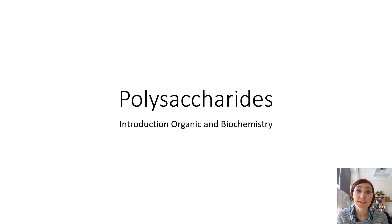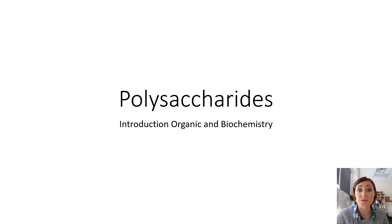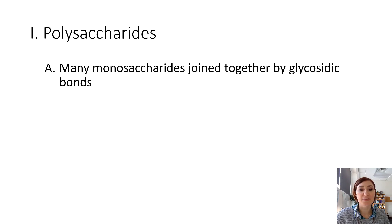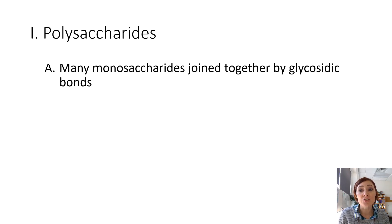In the polysaccharides podcast, we're going to go over some of the structural differences and glycosidic linkages between four common polysaccharides. Polysaccharides are polymers, and the monomers that make up polysaccharides are monosaccharides. Single sugars come together and are joined in a glycosidic linkage to form a polymer of sugars, or a polysaccharide.